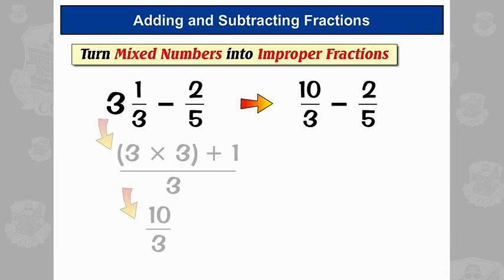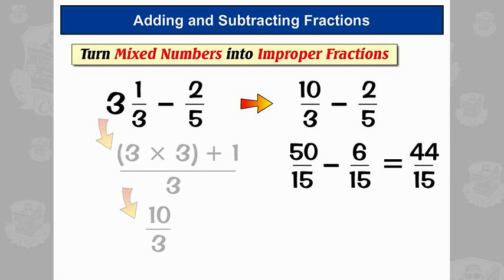So now we can use that instead. So 10 thirds minus 2 fifths. We need to find a number that's the same on the bottom, that's the first number that's in the times tables of 3 and 5, and that's 15. How do you get from 3 to 15? You times by 5. So we do the same thing to the top, it's 50. And this one, 5 to 15, you times by 3, 2 times 3 is 6. And now we can just say 50 minus 6 is 44. So 44 fifteenths, that's our answer.